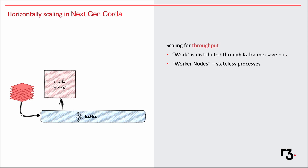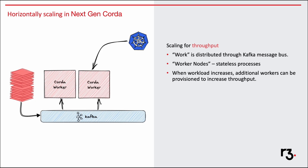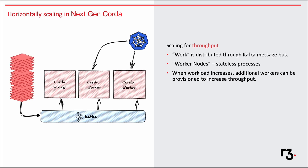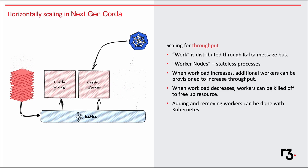In Next Generation Coda, we have used a message bus architecture using Kafka. Next-gen Coda introduced the concept of worker nodes, which are basically stateless processes. On the left, you can see a pile of work which can be picked up by any worker. If the load increases, more workers can be added as and when required. And when the load reduces, we can reduce the workers.